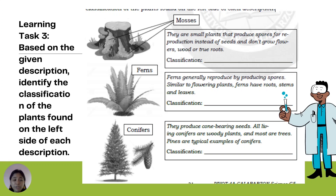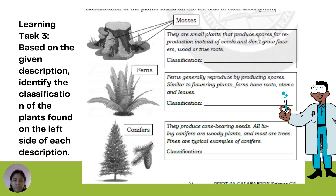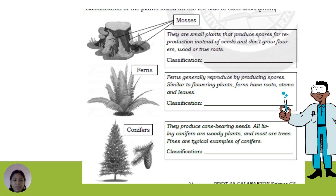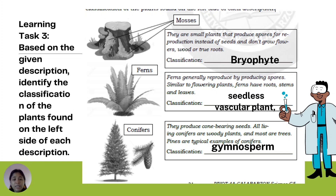For Learning Task 3, based on the given descriptions, identify the classification of each plant. Mosses: small plants that produce spores for reproduction instead of seeds and don't grow flowers, wood, or true roots. Ferns: generally reproduce by producing spores; similar to flowering plants, ferns have roots, stems, and leaves. Conifers: produce cone-bearing seeds; all living conifers are woody plants and most are trees — pines are a typical example. The correct answers are: bryophyte, seedless vascular plant, and gymnosperm.